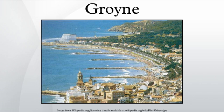A groin is a rigid hydraulic structure built from an ocean shore or from a bank that interrupts water flow and limits the movement of sediment. In the ocean, groins create beaches or prevent them from being washed away by longshore drift.